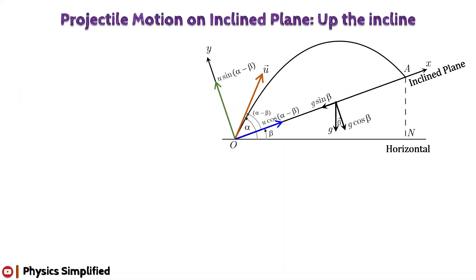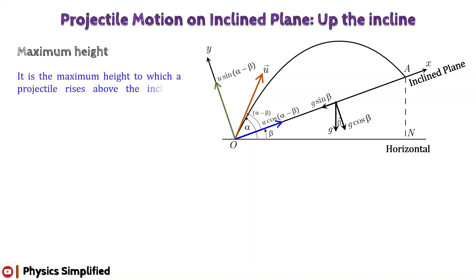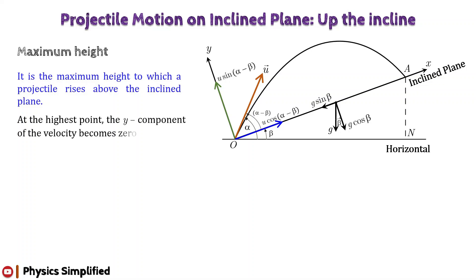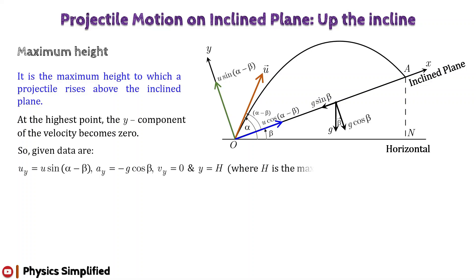Next, we will calculate the maximum height attained by the projectile up the inclined plane. Maximum height refers to the height to which the projectile rises above the level of projection — in this case, the maximum height above the inclined plane while projected up the incline. Since at the highest point the y-component of the velocity of the projectile is zero, we consider the data along the y-axis: initial velocity u_y = u sin(α−β), acceleration a_y = −g cos β, final velocity v_y = 0, and displacement along the y-axis equal to capital H, where H is the maximum height attained by the projectile.